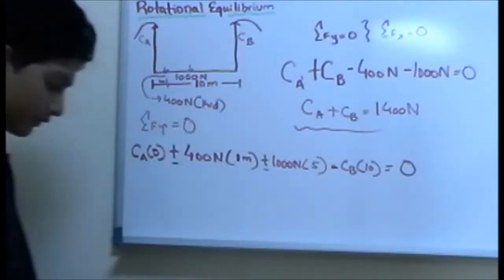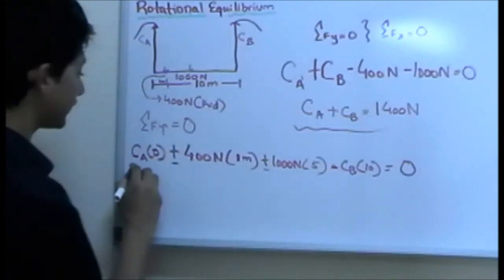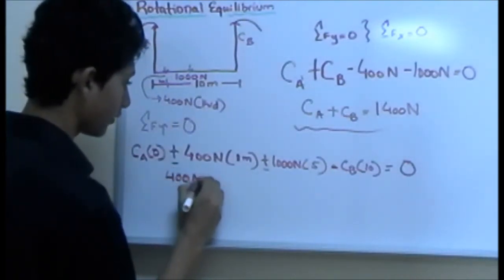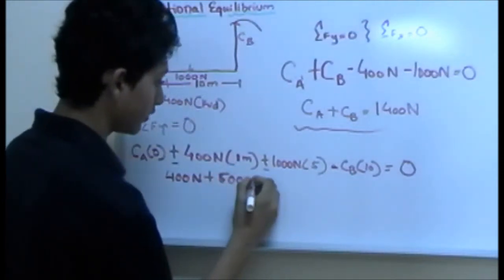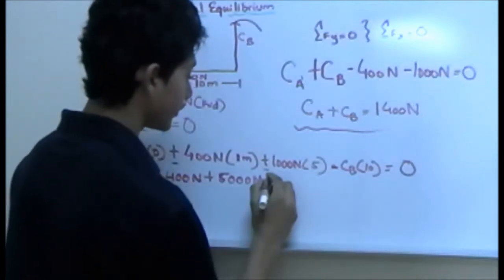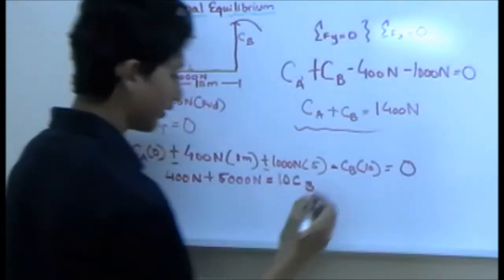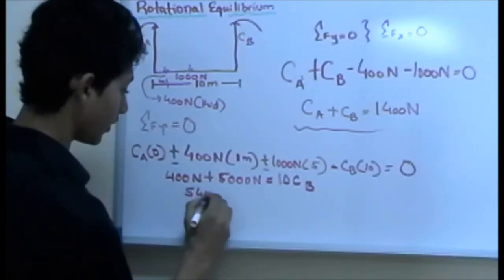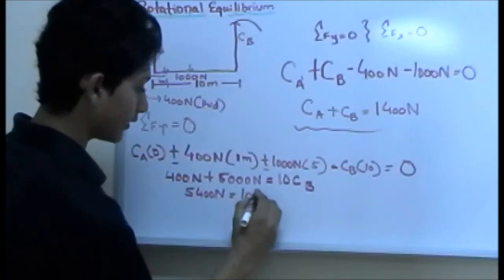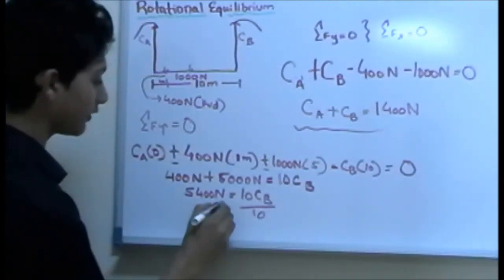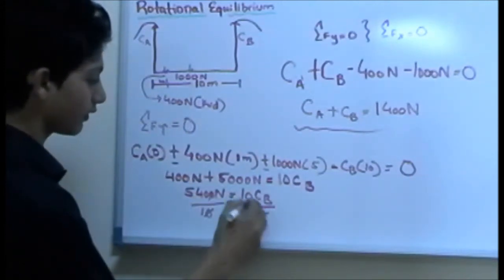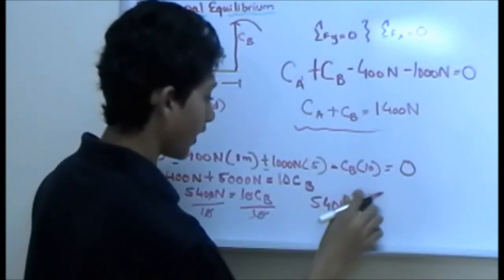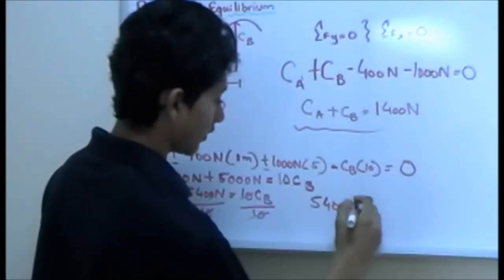When you work this out, CA times 0 goes to zero. Then we have 400 N plus 5000 N. We move the CB term over, giving us 10·CB equals 5400 N. Dividing both sides by 10, we find CB equals 540 N.